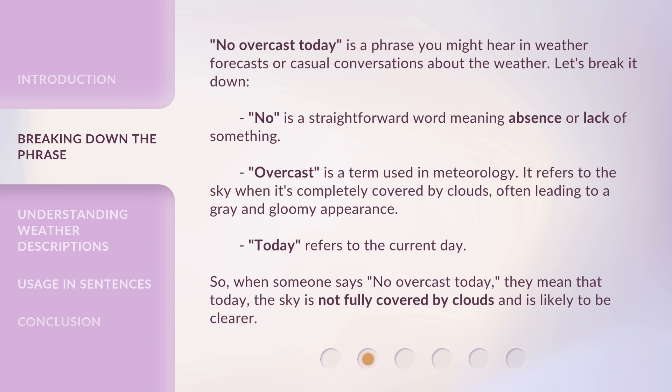Today refers to the current day. So, when someone says No Overcast Today, they mean that today the sky is not fully covered by clouds and is likely to be clearer.